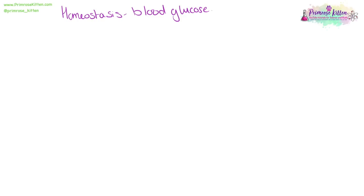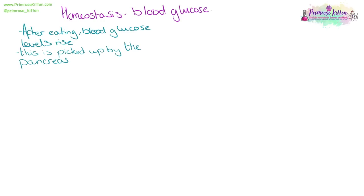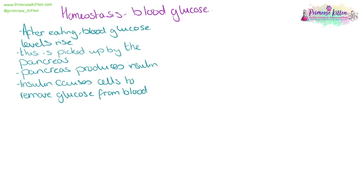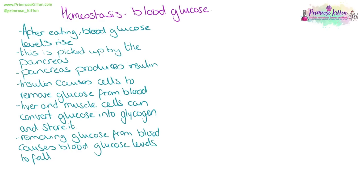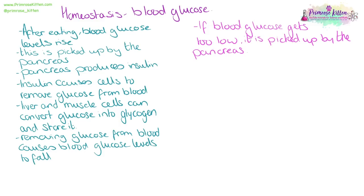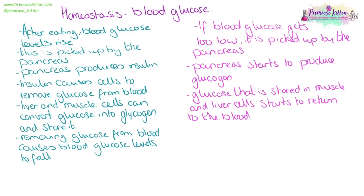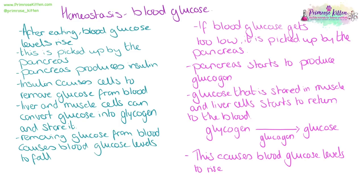Control of blood glucose is complex. After a meal, blood glucose rises and is detected by the pancreas, which produces insulin and releases it into the blood. Insulin causes body cells to remove glucose from the blood; liver and muscle cells convert glucose into glycogen and store it, causing blood glucose levels to fall. If blood glucose gets too low, the pancreas produces glucagon, which causes the stored glycogen in muscle and liver cells to be converted back into glucose and returned to the blood, raising blood glucose levels again. The key names: the stored form of glucose is glycogen, and glucagon converts that back into glucose.